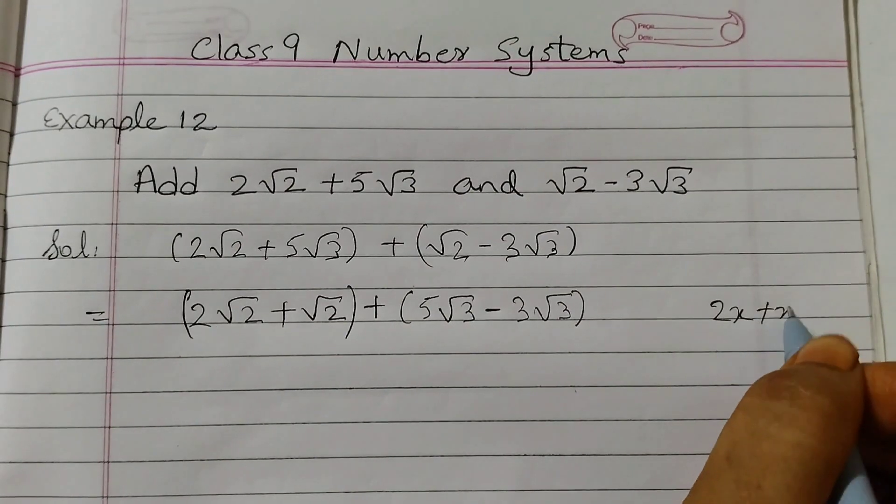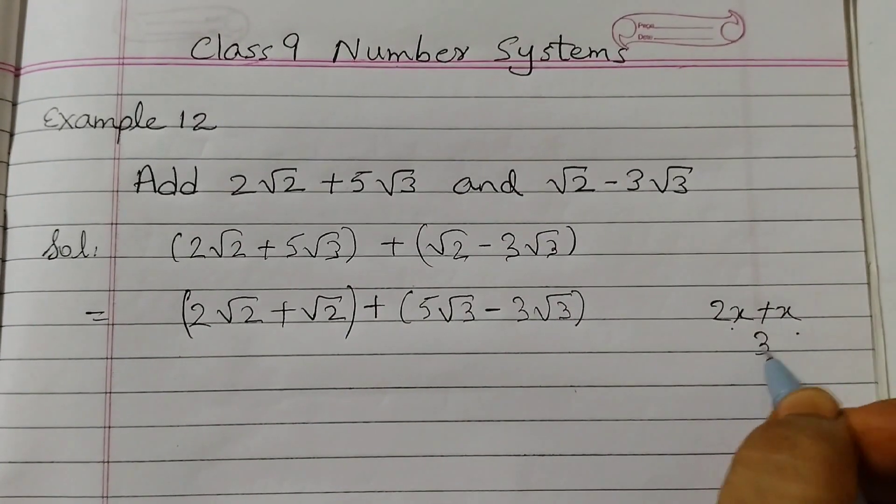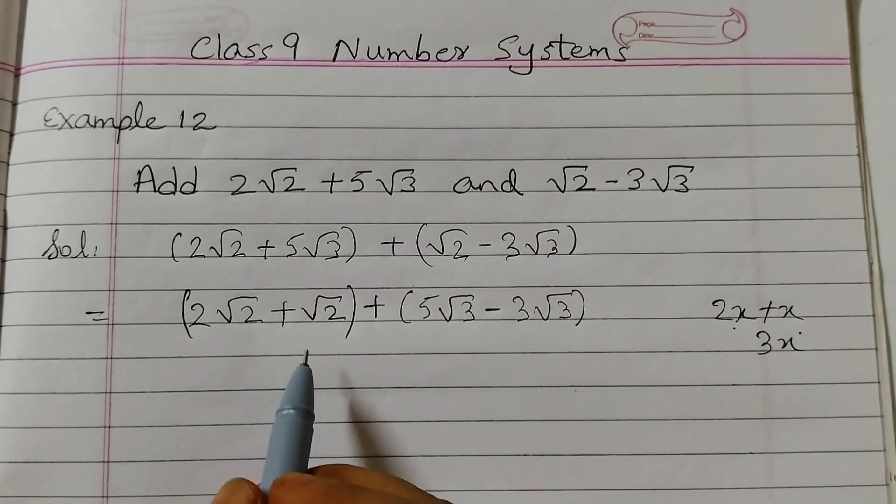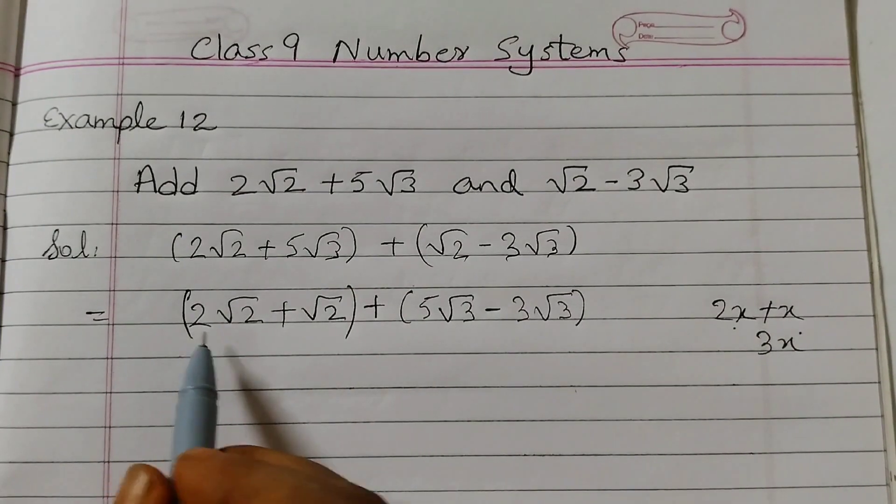Same way, when we deal with irrational numbers, we would do 2, and here we don't have any number, so 1. 2 plus 1 is 3.